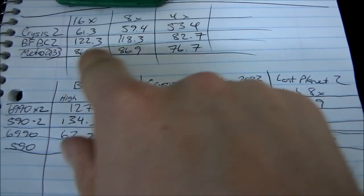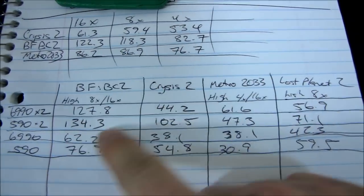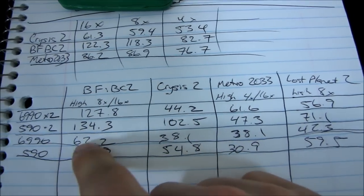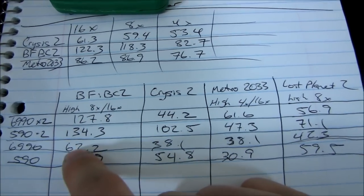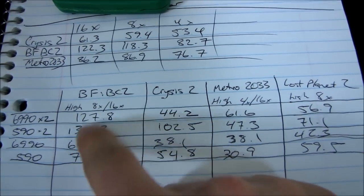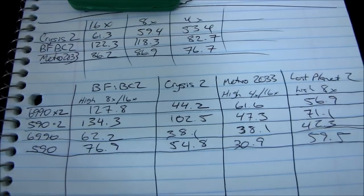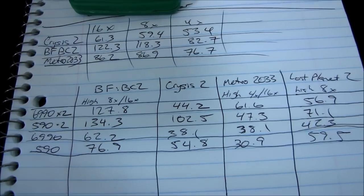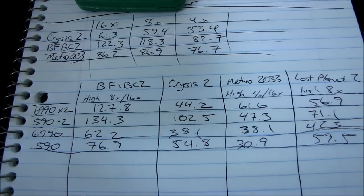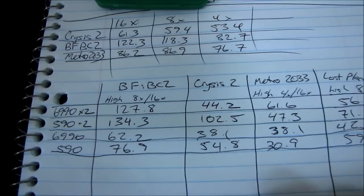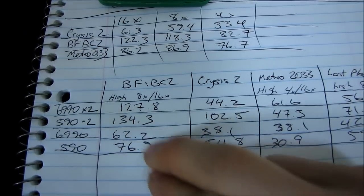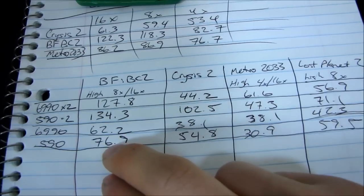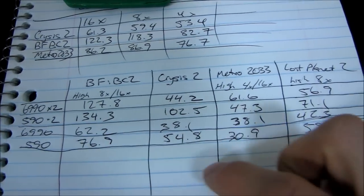The game that scaled the best out of my test suite was Battlefield Bad Company 2. The 6990s actually scaled more than 100%, which makes no sense, but we'll consider that within the margin of error and call it 100% scaling. For the 590s we saw almost 100% scaling — something like 90% scaling — so excellent scaling on that particular game.